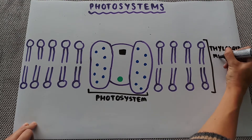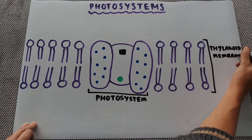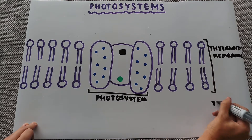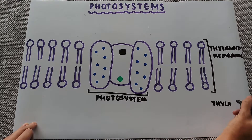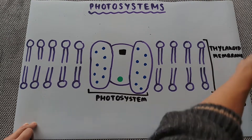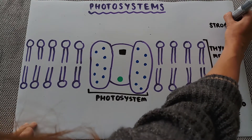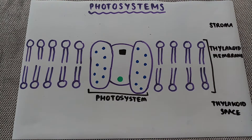In terms of either side of this membrane, on the inside here is the thylakoid space — the inside section of the flattened sacs which are the thylakoids. Over this side we have the outside of the thylakoids, which is then the stroma of the chloroplast.